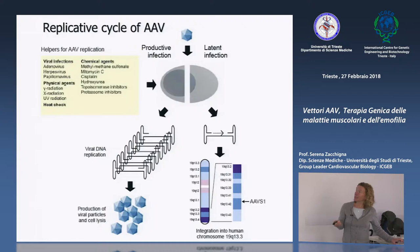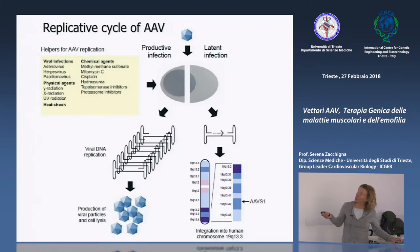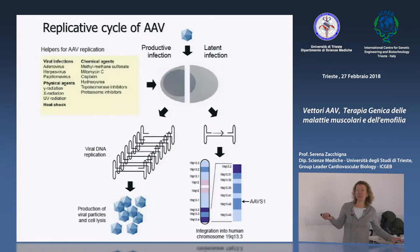Tutto ciò che stressa la cellula, in particolare agenti genotossici che inducono danno al DNA, aumenta la permissività di AAV, facendo sì che possa andare incontro a un ciclo replicativo produttivo.